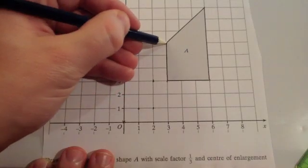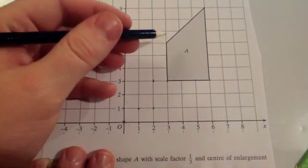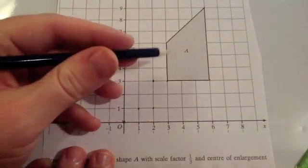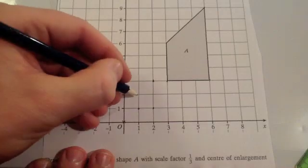And our last point, our last vertex, this one, is 3 across and 6 up. Well, if you divide those by 3, instead of going 3 across you'd go 1 across. Instead of going 6 up you'd go 2 up. So it'd be here.